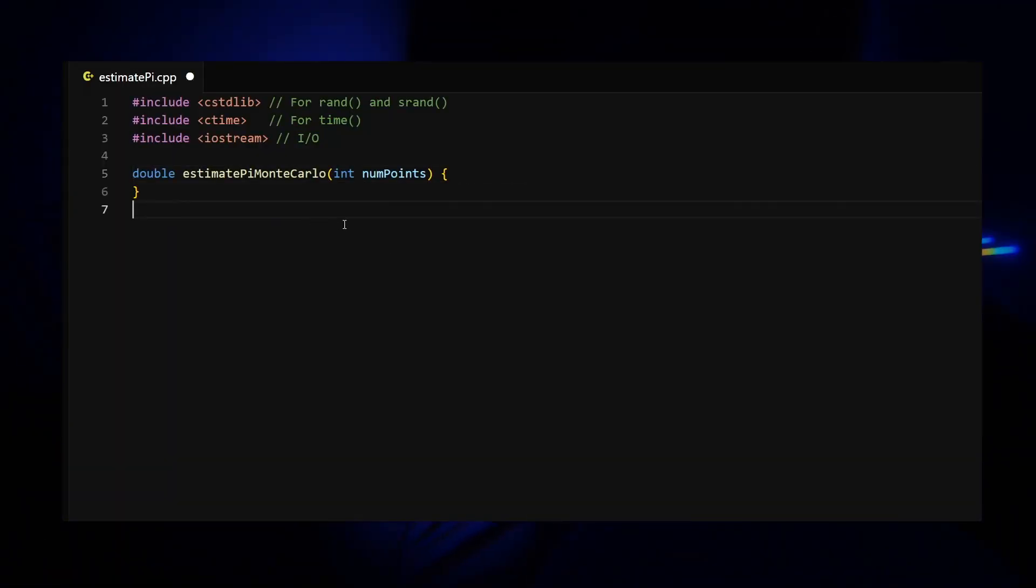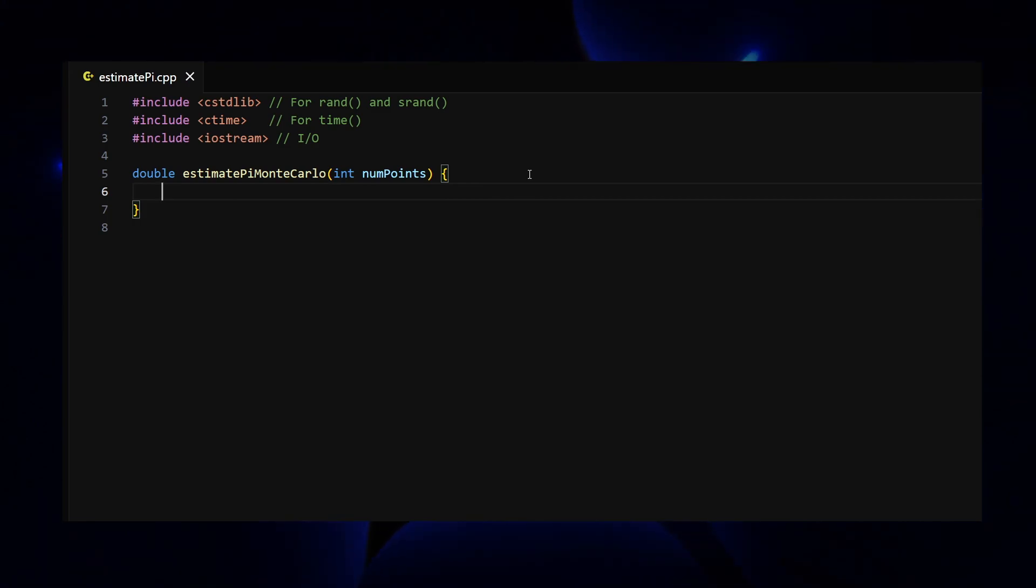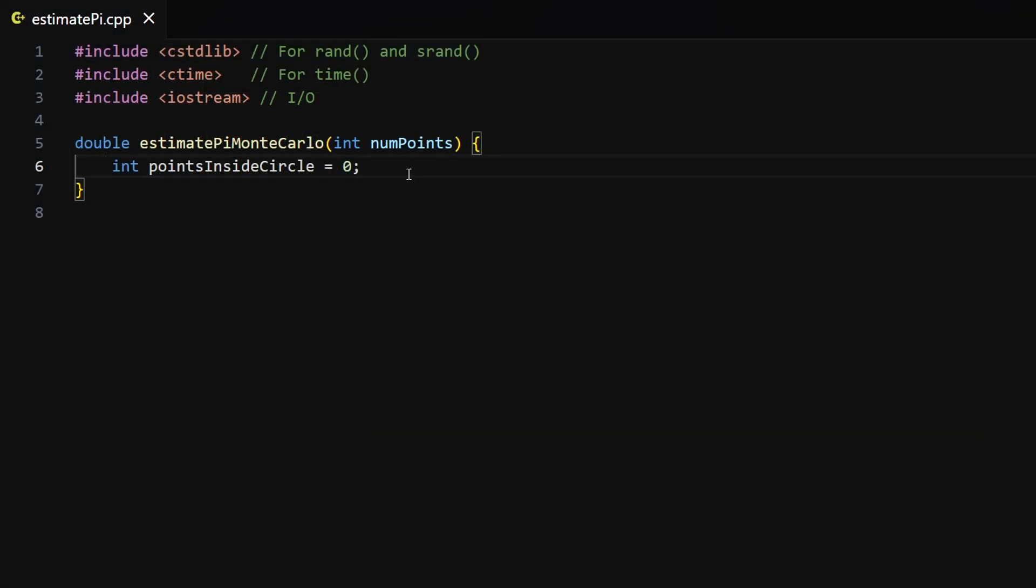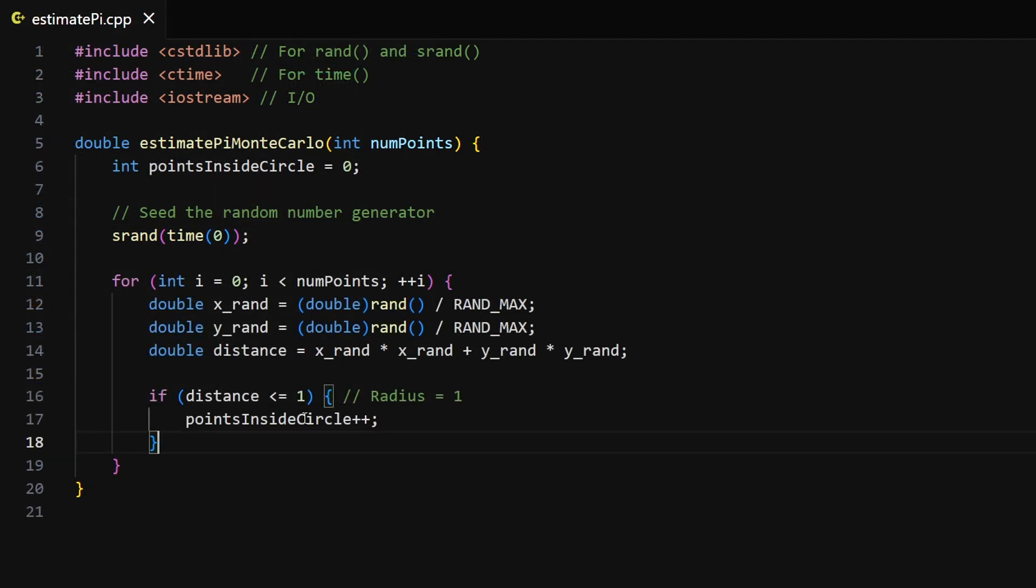Let's create a function that takes a number of simulations as a parameter. We'll need to count the number of points inside the circle. For this, we should declare a variable. Then, seed the random number generator, which is a good practice. And now we can perform all the simulations in the for loop.